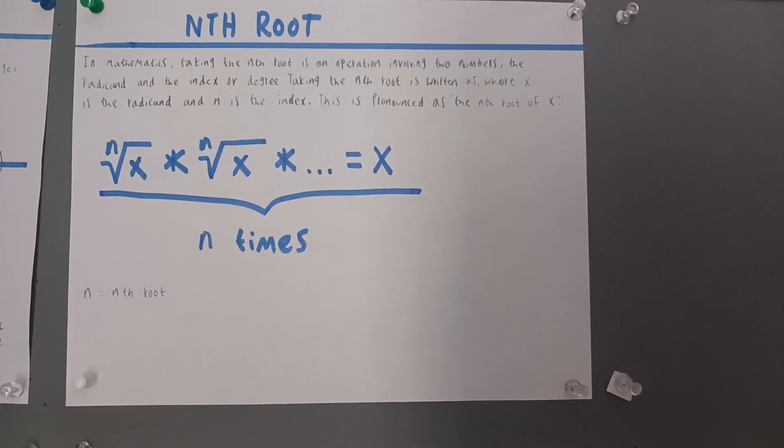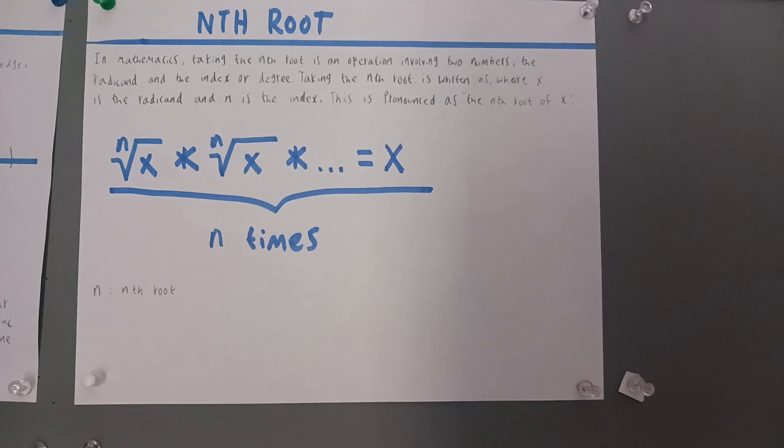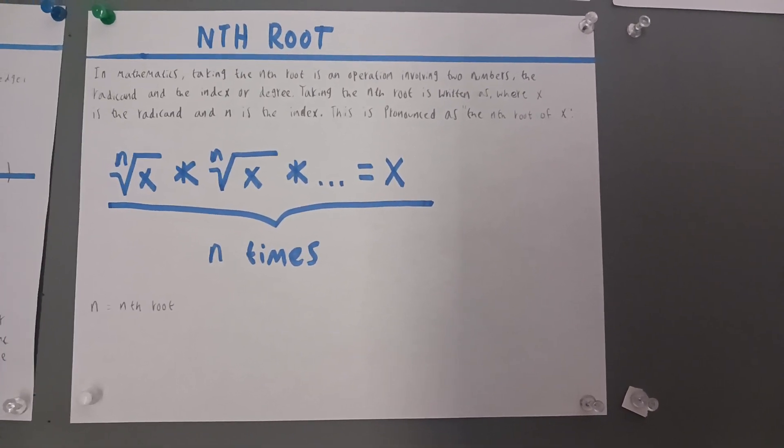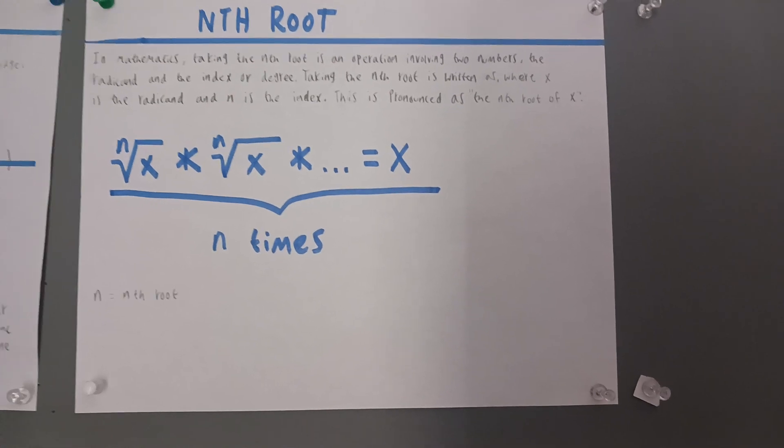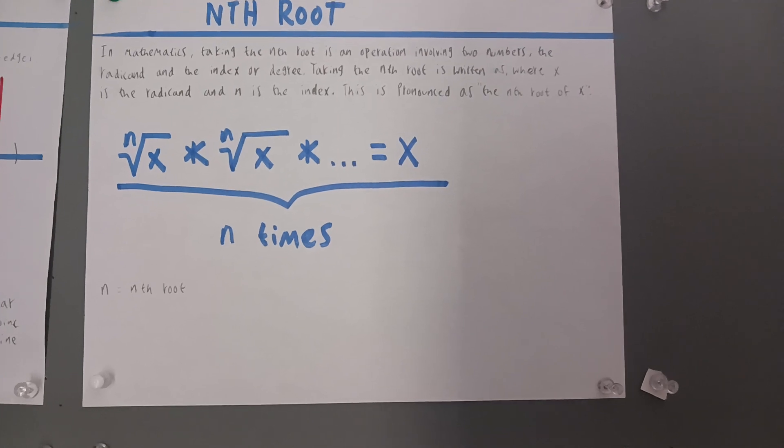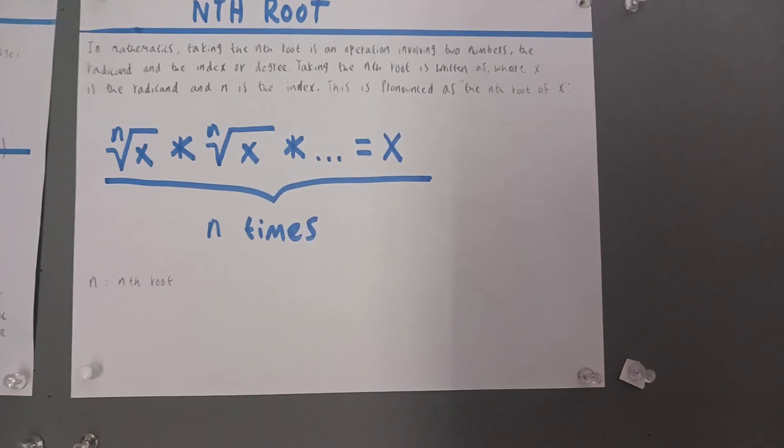In mathematics, taking the nth root is an operation involving two numbers, the radicand and the index or degree. Taking the nth root is written where x is the radicand and n is the index.